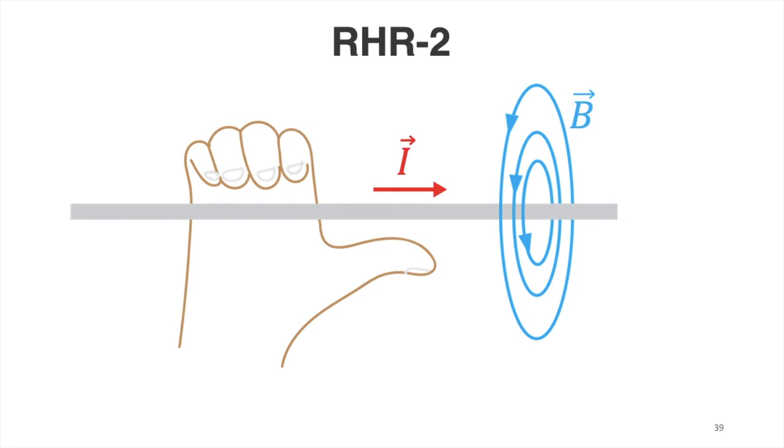So for example, in this setup, the current is moving to the right. You just have to point your right-hand thumb into the direction of the current and try to curl your fingers along this wire. So whatever the direction of your fingers would be the direction of the magnetic field lines.